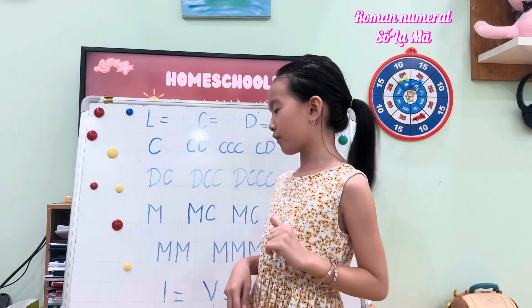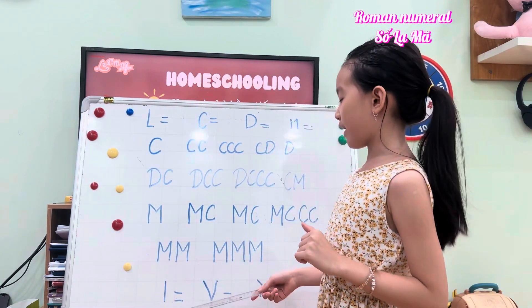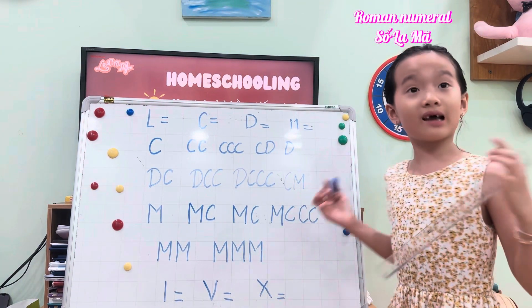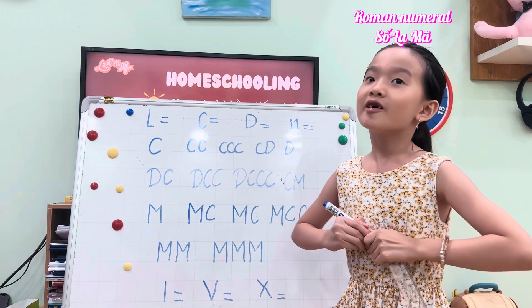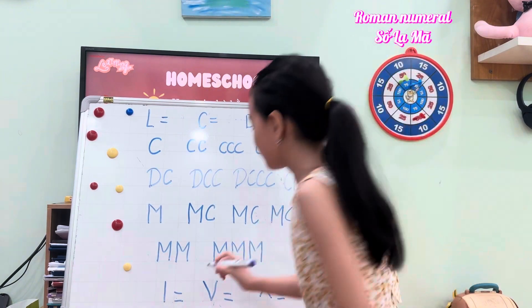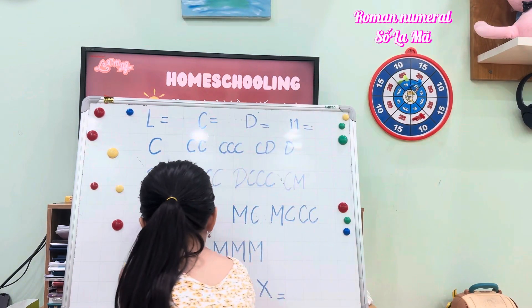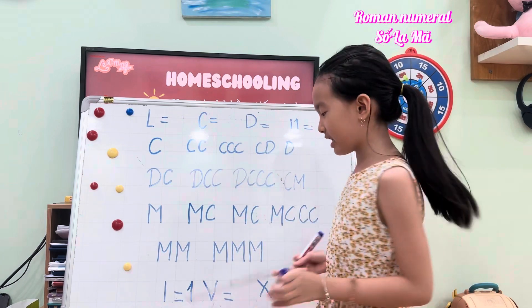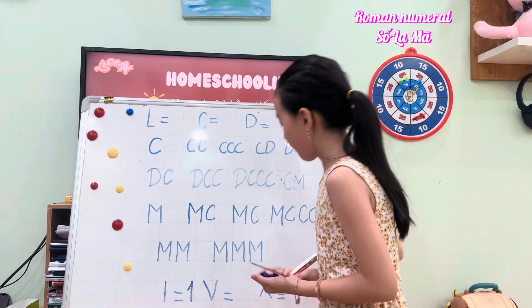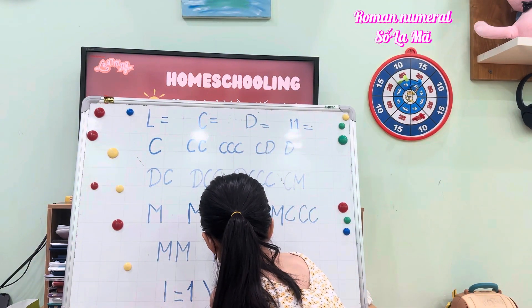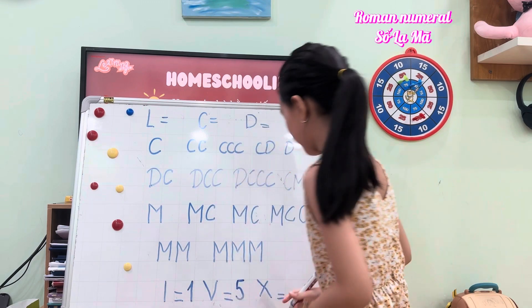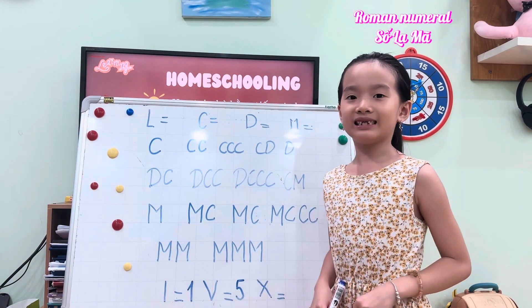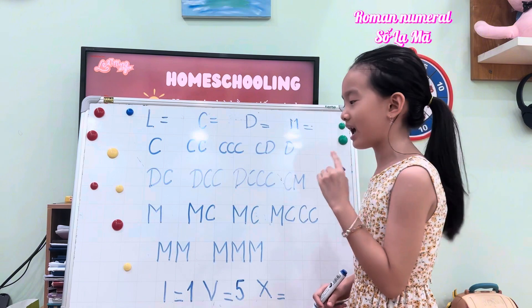Now, you probably have known about the I, the V, and the X. So, what does I equal? You're right, I equals 1. What about V? Yes, V equals 5. What about X? It is right, X equals number 10.